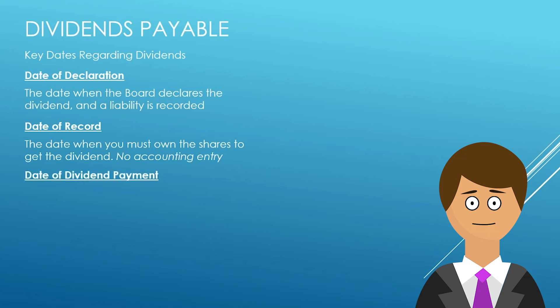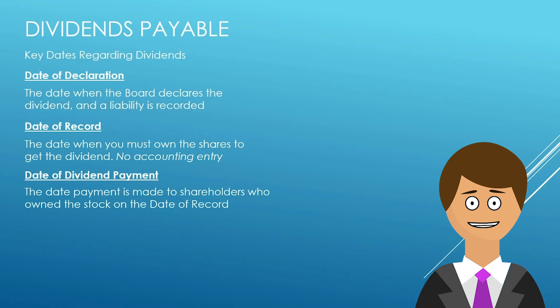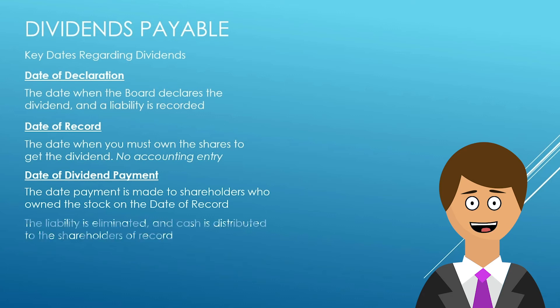Then comes the date of dividend payment — the date where the shareholders who owned that stock on the date of record will get paid. You could own that stock on the date of record, sell it the next day, and you'll still get that dividend payment on the future payment date because you did own that stock on the date of record. We will do an accounting entry on the date of dividend payment where we eliminate the liability and cash is distributed to those shareholders of record.